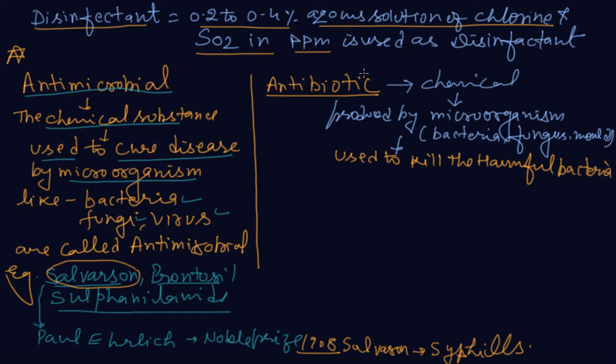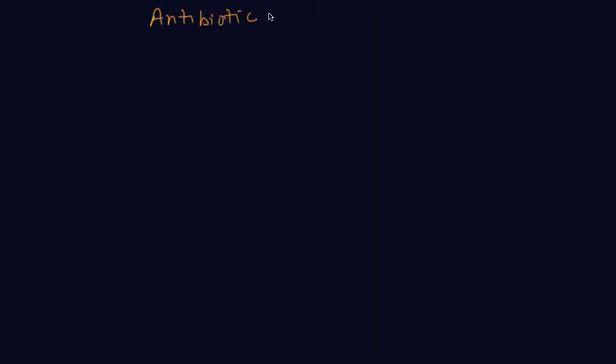Antibiotic - biotic means living, bio means living. The medicines, the chemicals which we are using to kill bacteria are harmful bacteria, and they are produced by microorganisms. Examples of antibiotics are penicillin and amoxicillin.